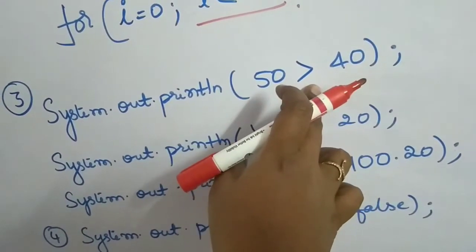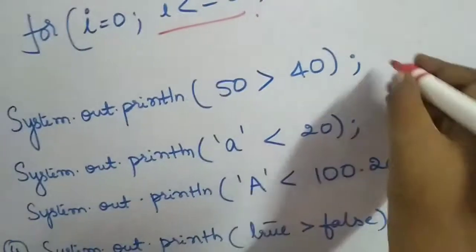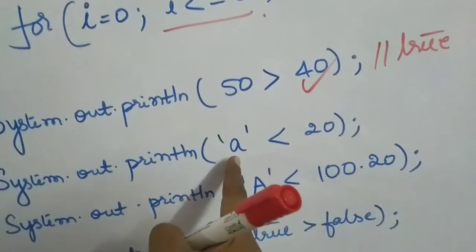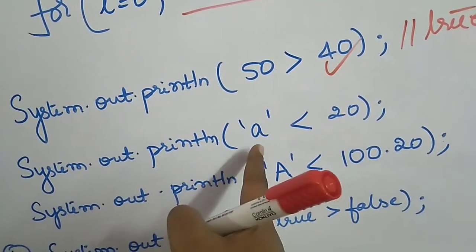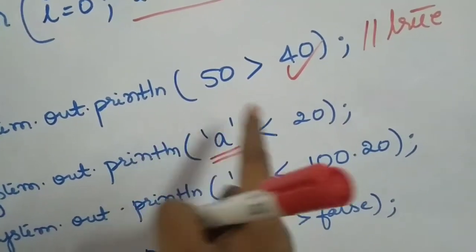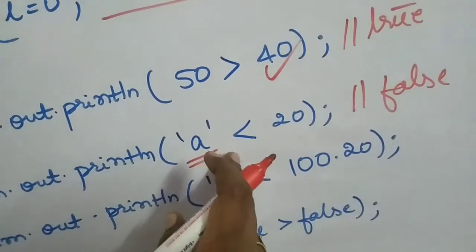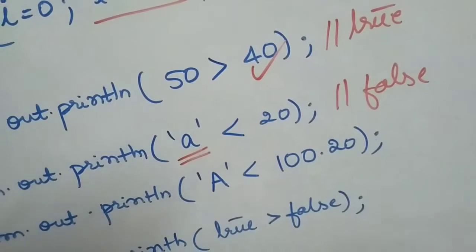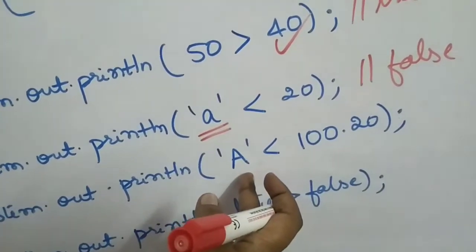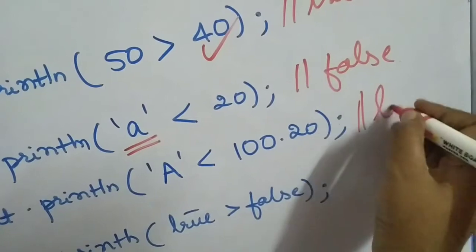I can use relational operators inside System.out.println. For example, I can say 50 > 40 — it will print true on the screen. Since these operators can be applied on integers, floats, and characters, I can also use them with characters — the char will be converted to its integer Unicode value for comparison. The value of 'A' in Unicode is greater than 20, so that comparison returns false. And capital 'A' is less than 100.20, so that will return true after A is converted to double for comparison.